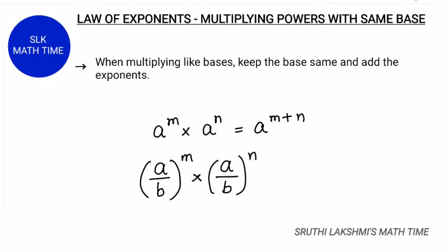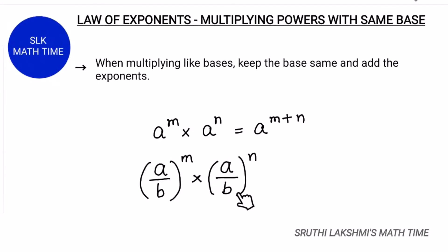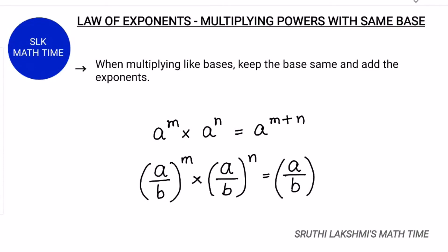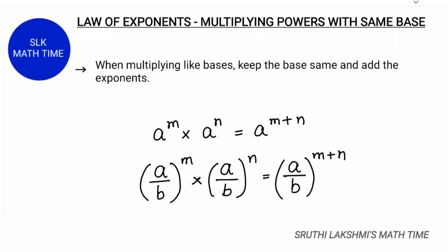Let's see another example: a by b the whole power m, into a by b the whole power n. Here the base, or the common base, is a by b. So we write it and then we add the exponents, giving us a by b whole power m plus n.